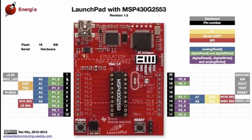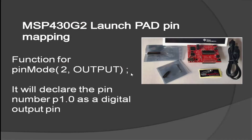Pin maps are used to access microcontroller pins in Energia IDE. For example, if you want to access pin P1.0 of the microcontroller, you will use number 2. Similarly, if you want to access P2.0, you will use number 8.